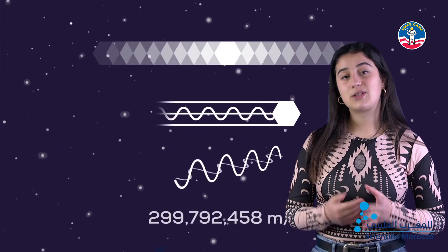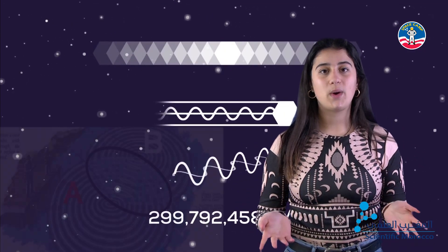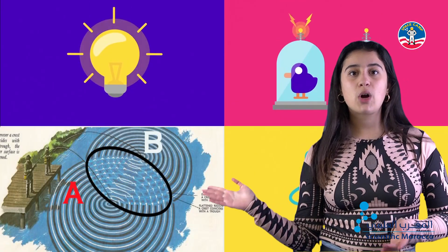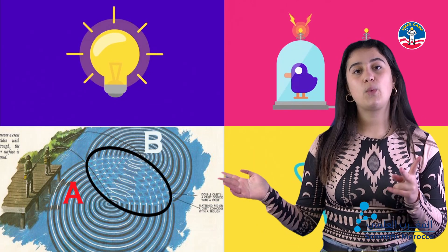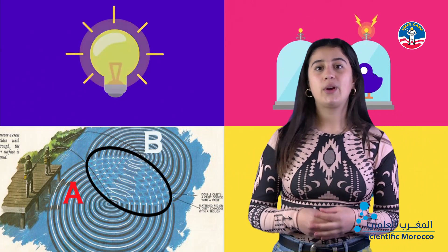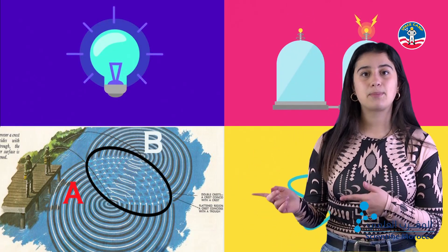Before getting into the experiment, we'll see how a water wave behaves. As the picture shows, when two waves, A and B, meet with each other, they interfere, creating this pattern.